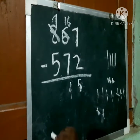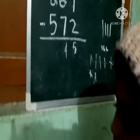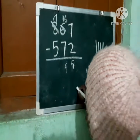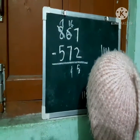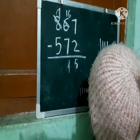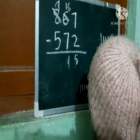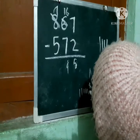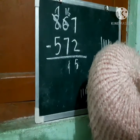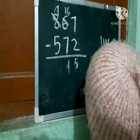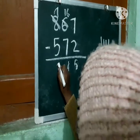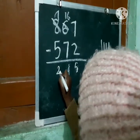And 7 minus 5. 7 minus 5: 1, 2, 3, 4, 5, 6, 7 — and minus 5: 1, 2, 3, 4, 5 — answer is 2.